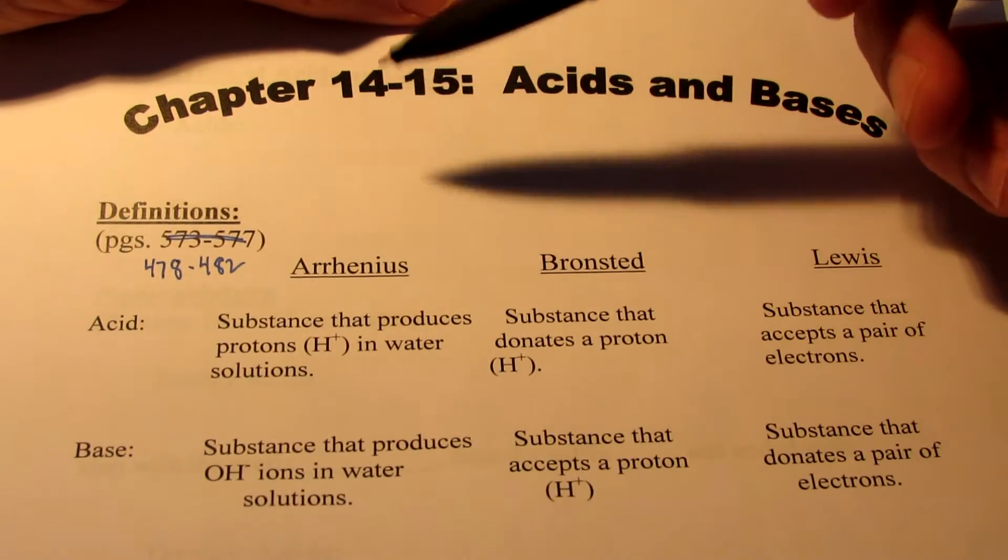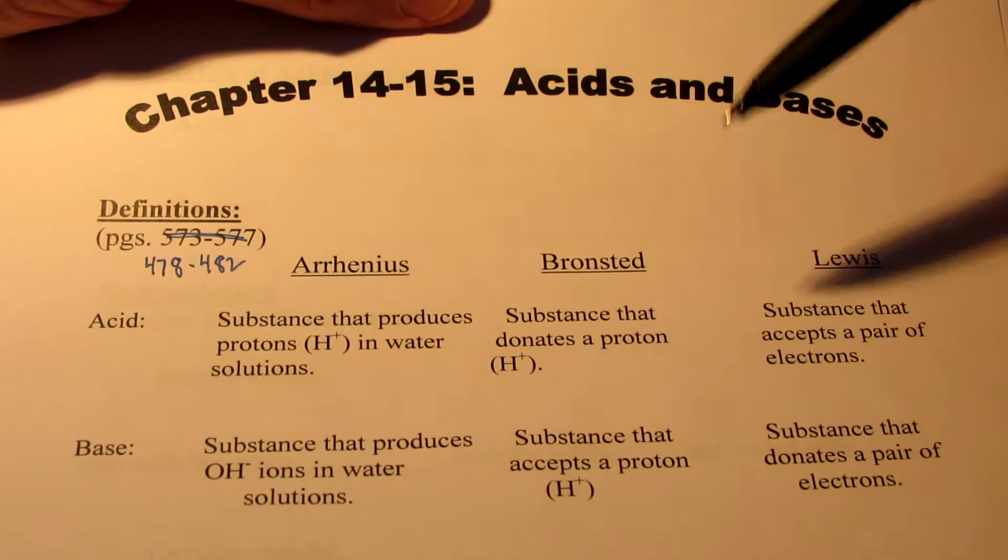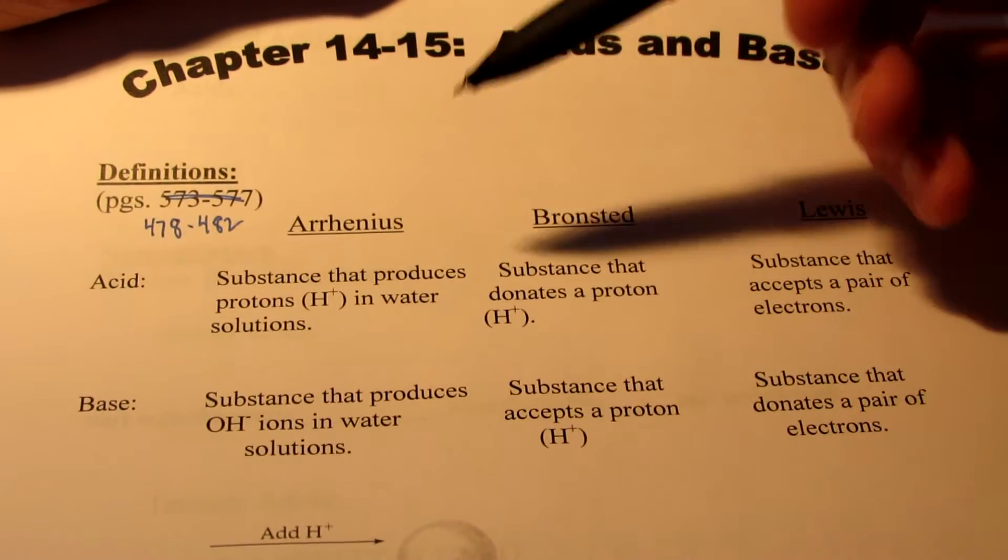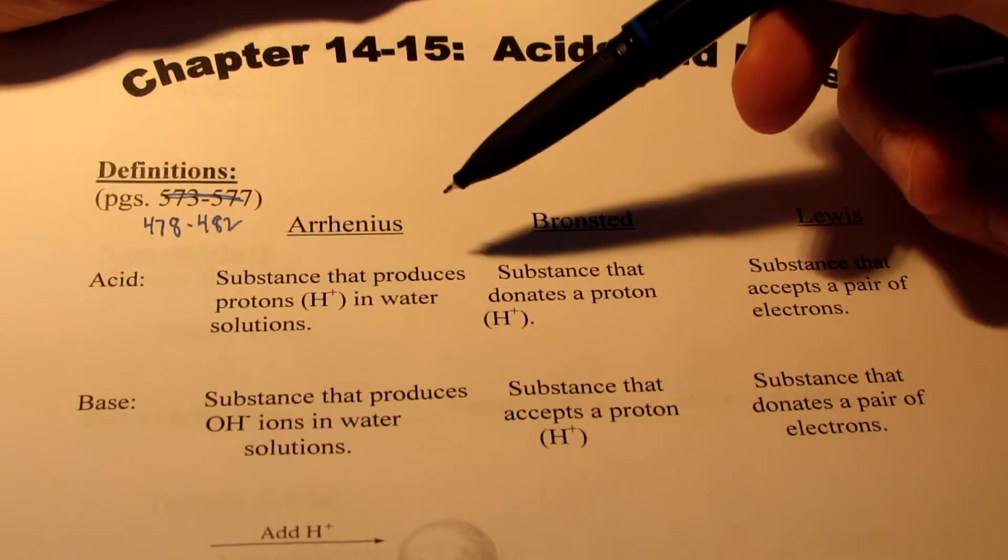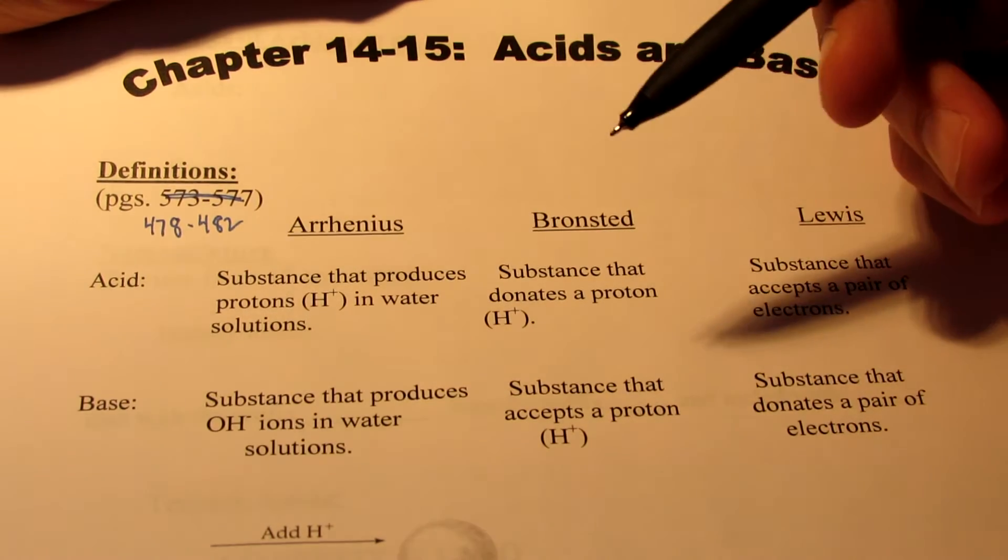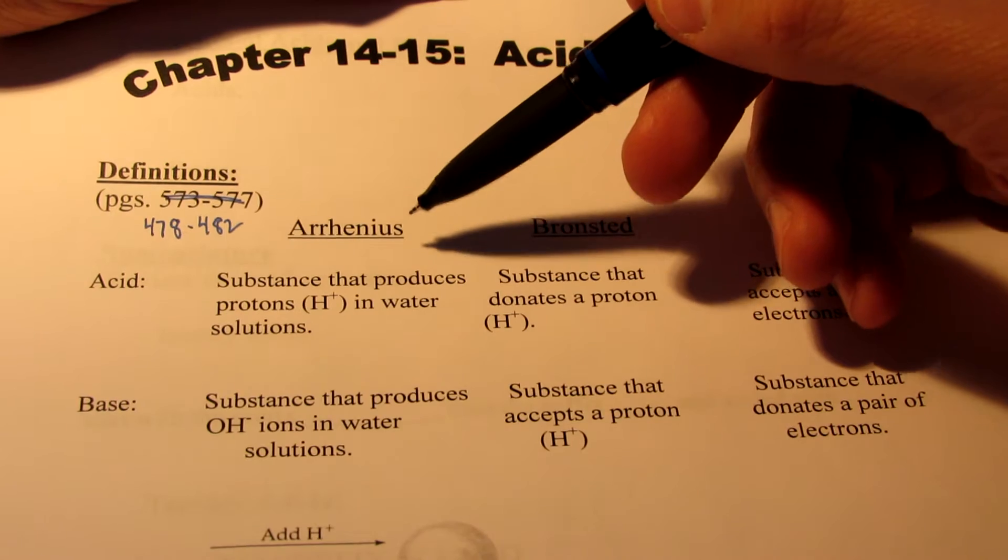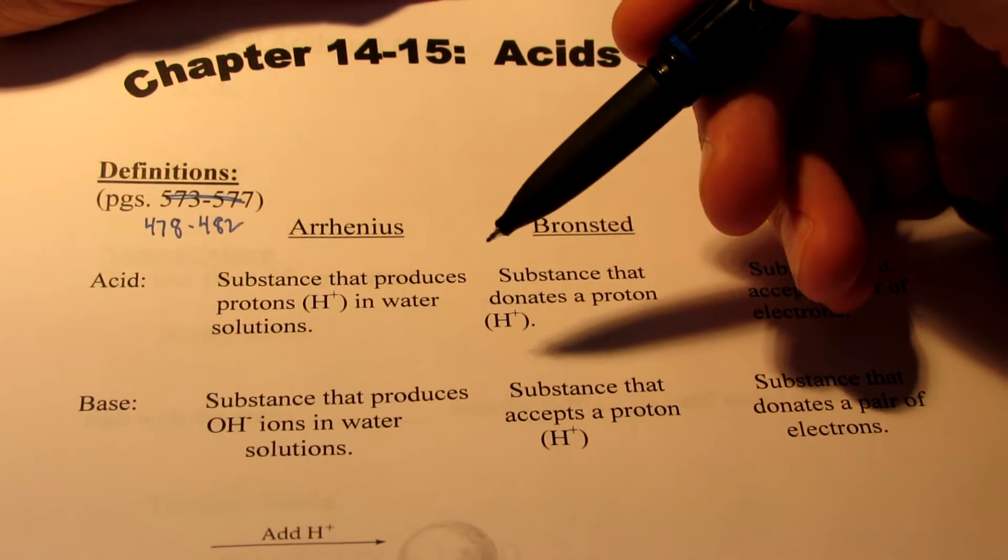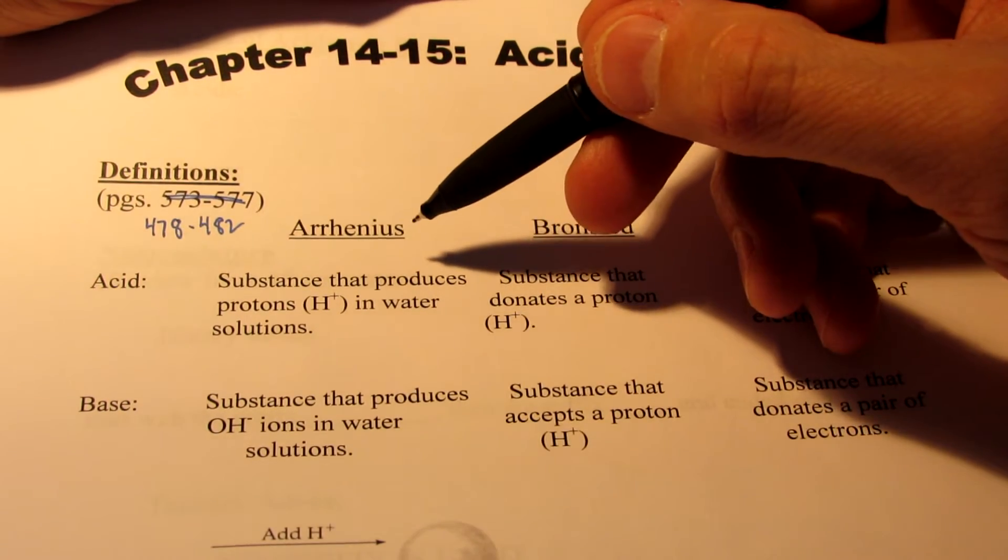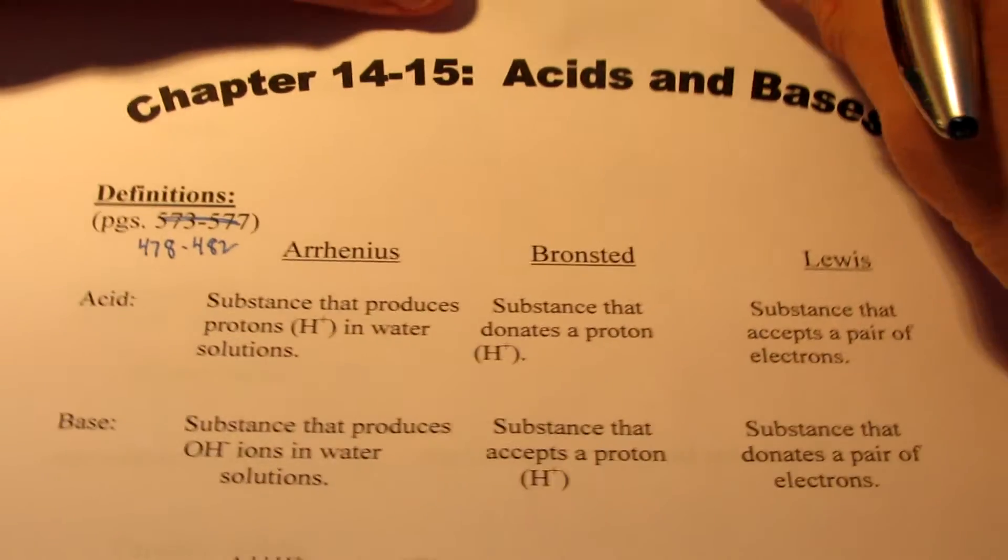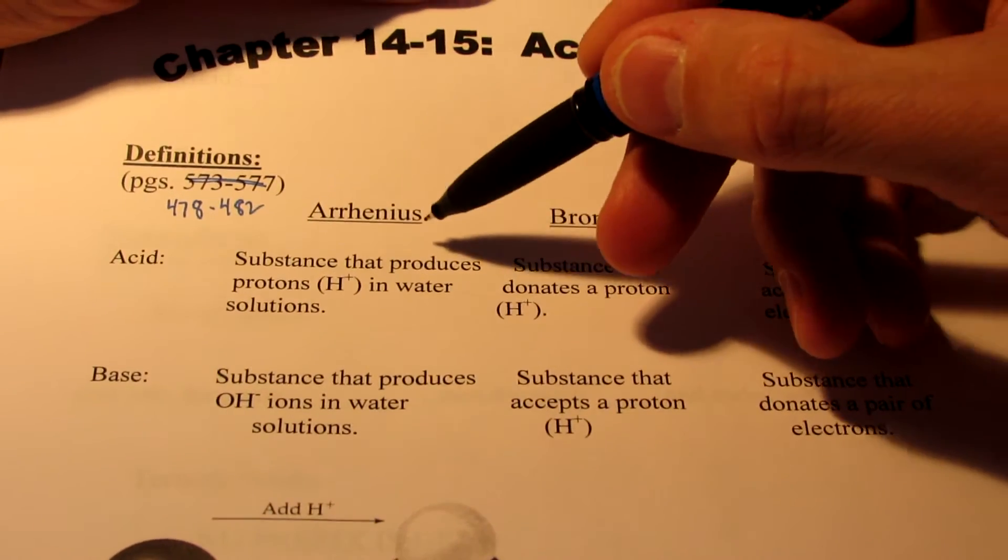It goes into some detail as to what these definitions are. We're going to define them here in this video quickly, but for greater depth and background, I'd encourage you to read those pages from your textbook. The first definition we're going to discuss is probably the most common, most easily understood, and therefore most often used in a first-year high school chemistry class, and that's the Arrhenius definition of an acid or a base.